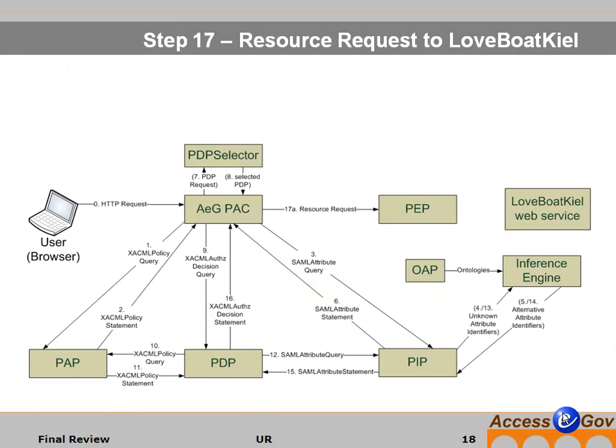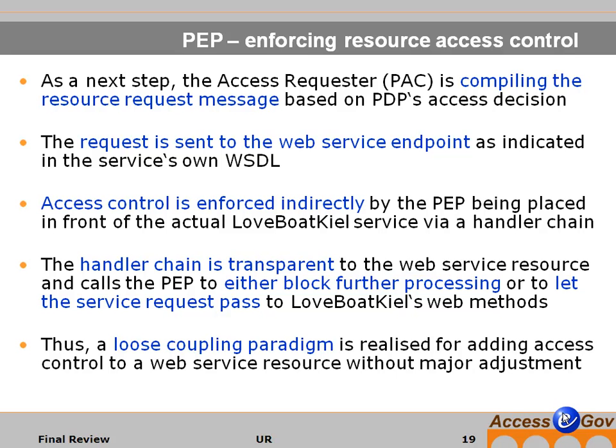Next, the personal assistant client requests the resource of the Love Boat Charter service in order to reserve for the marriage request. The personal assistant client is compiling the resource request message based on the access decision that we just got from the PDP, and the request is sent to the web service endpoint indicated in the service's own WSDL description. The access control is directly and indirectly enforced by the policy enforcement point that is placed in front of the actual web service resource. A loose coupling paradigm is realized for adding access control to a web service resource that does not actually need to know that access control is enforced.